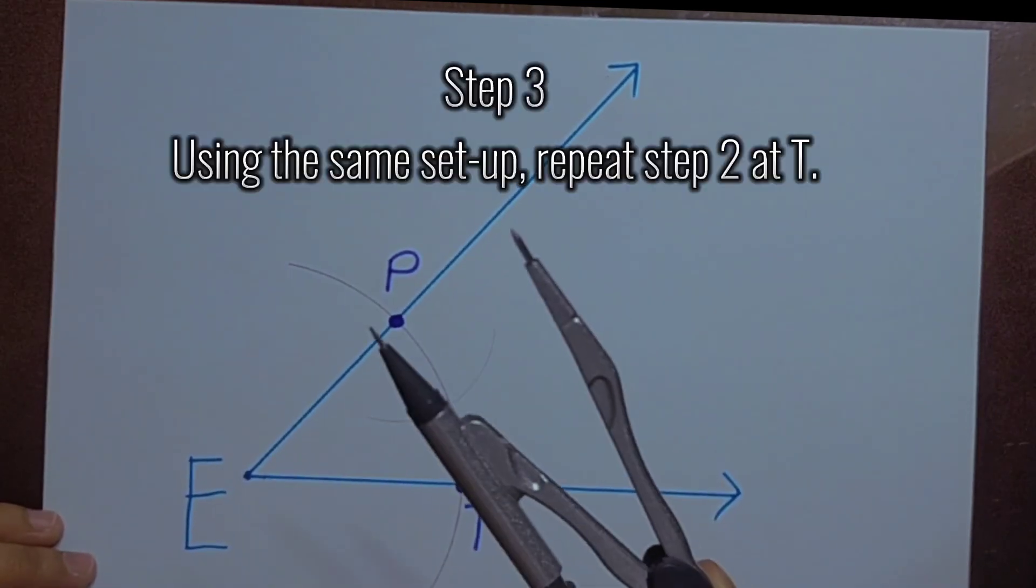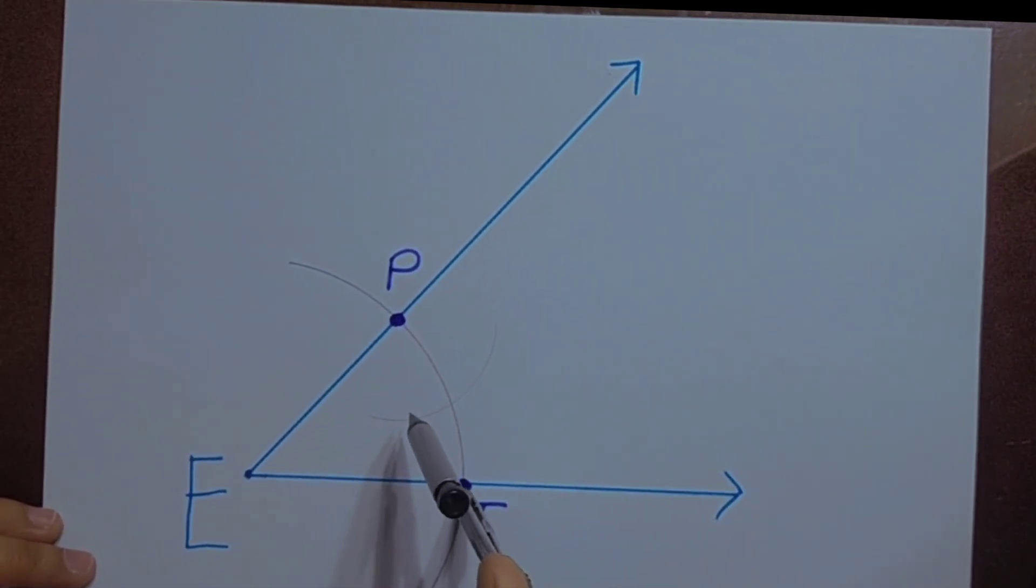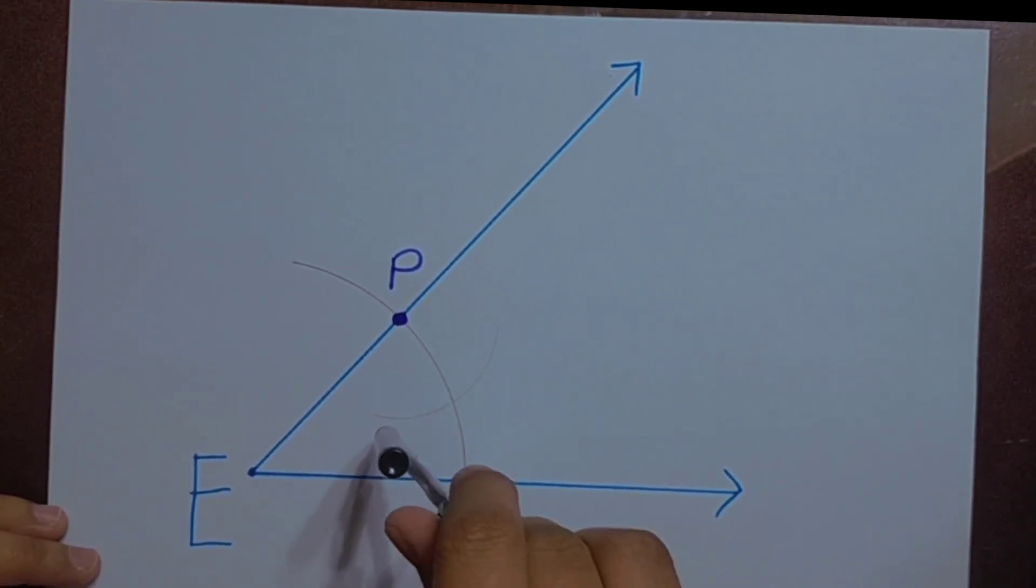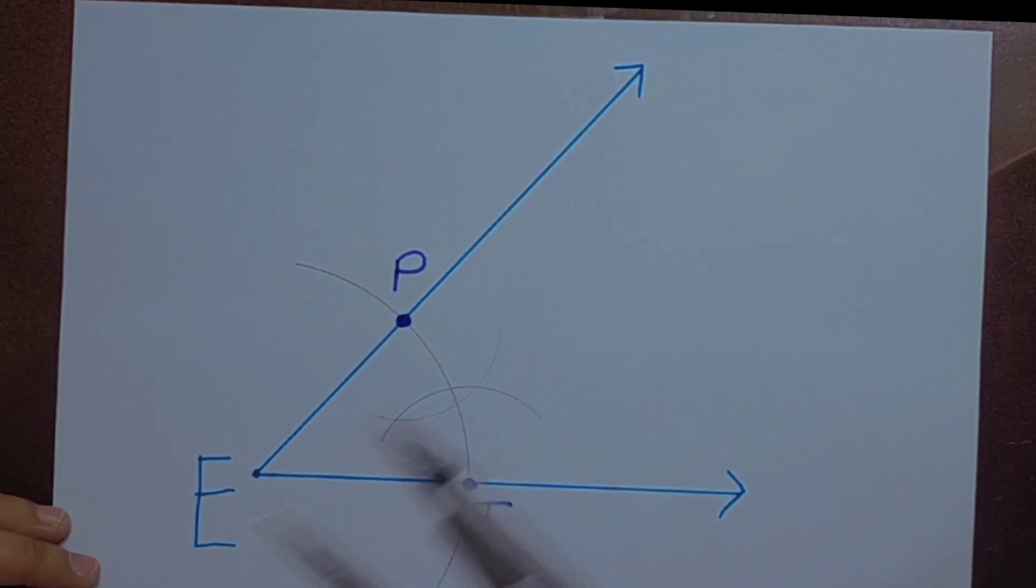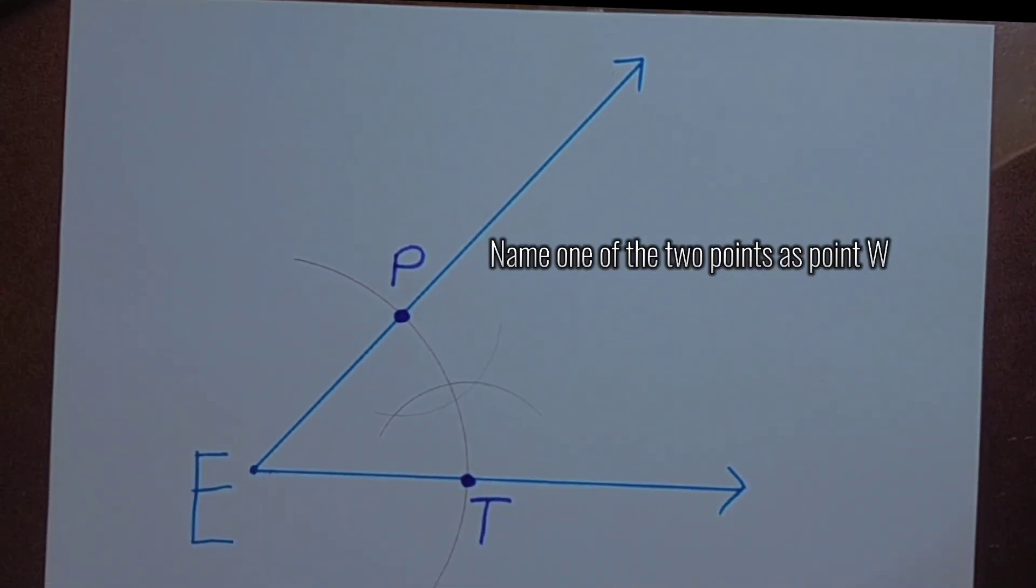Step 3. Using the same setup, repeat step 2 at T. Name one of the two points as point W.